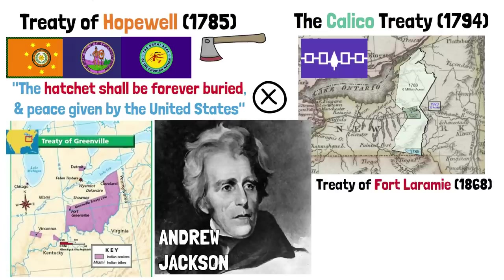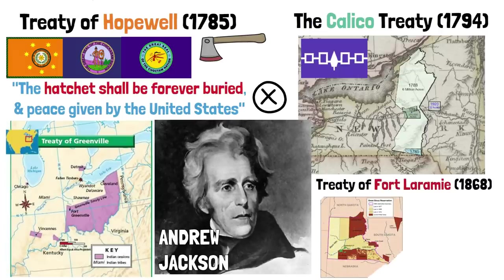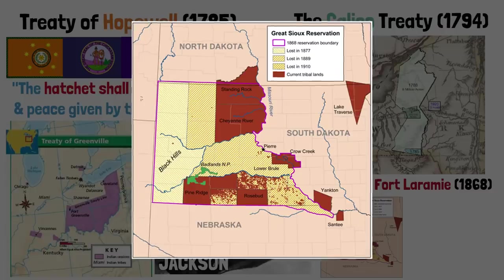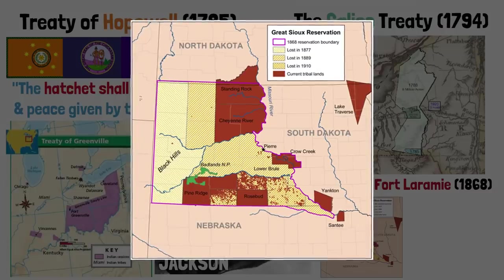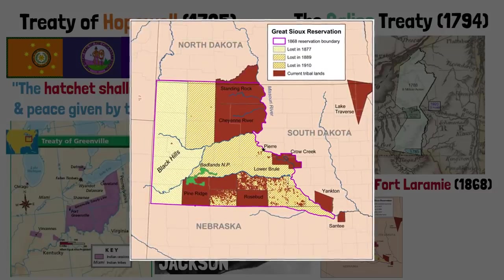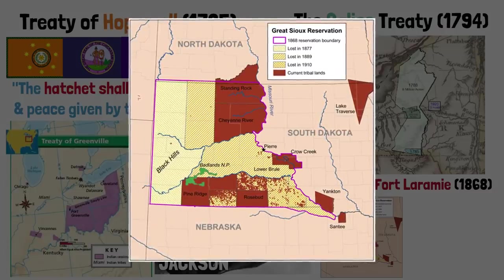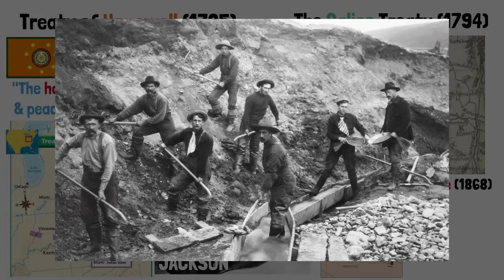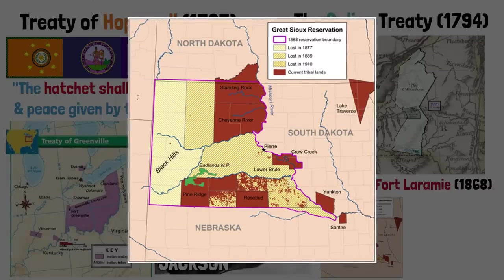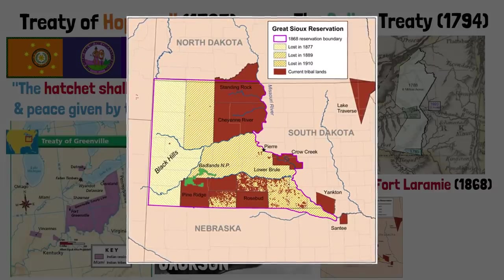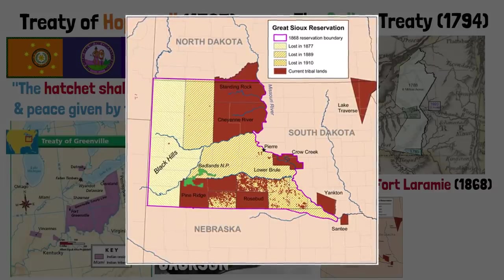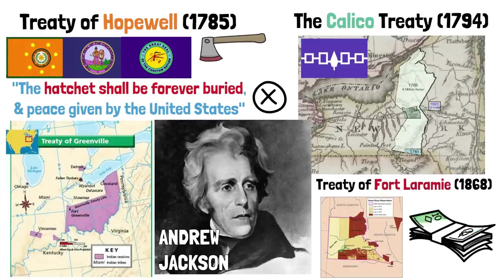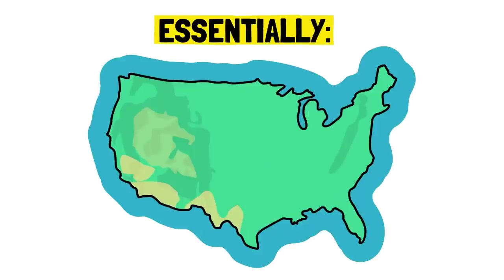In the Treaty of Fort Laramie in 1868, the US government recognized the Black Hills of Dakota as the Great Sioux Reservation, the exclusive territory of the Sioux people. But after gold was discovered in the region, miners and settlers began moving there and Native sovereignty was ignored. In 1980, the Supreme Court ruled that the Black Hills were in fact illegally confiscated and awarded the Sioux more than $100 million in reparations, but Sioux leaders rejected the payment, saying that the land had never been for sale.